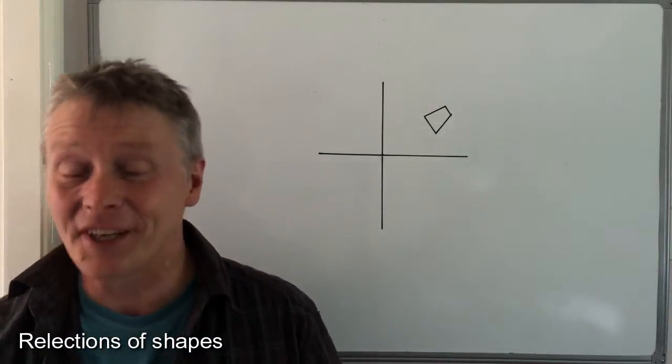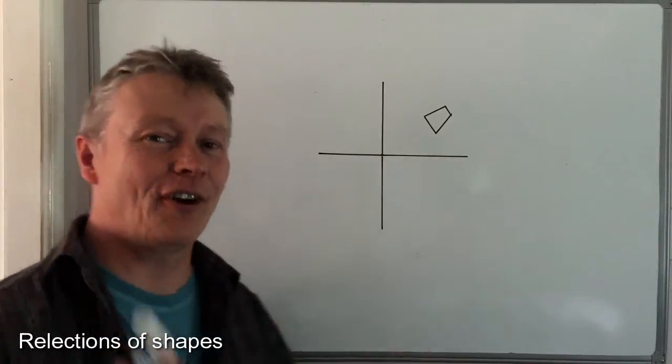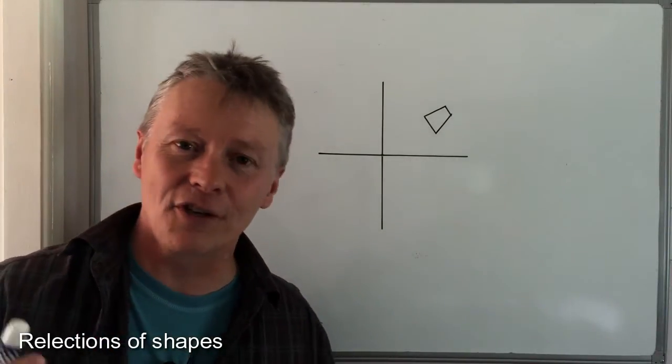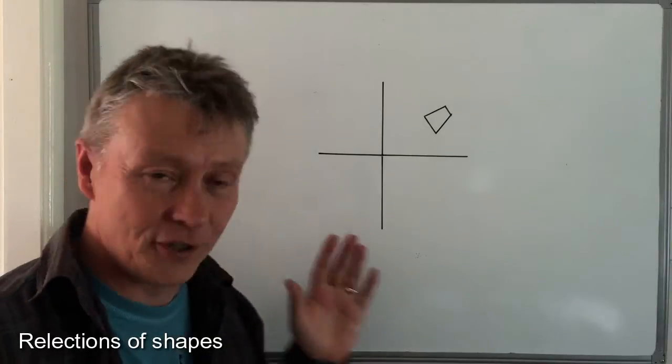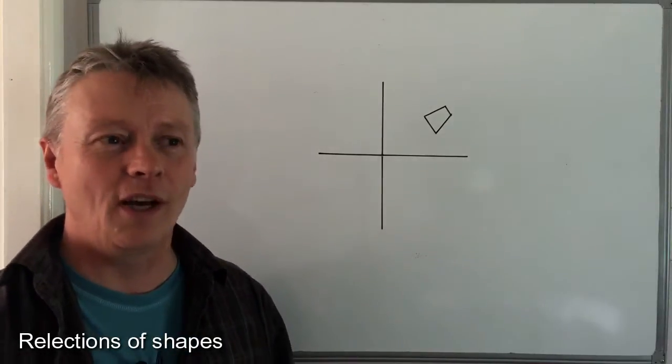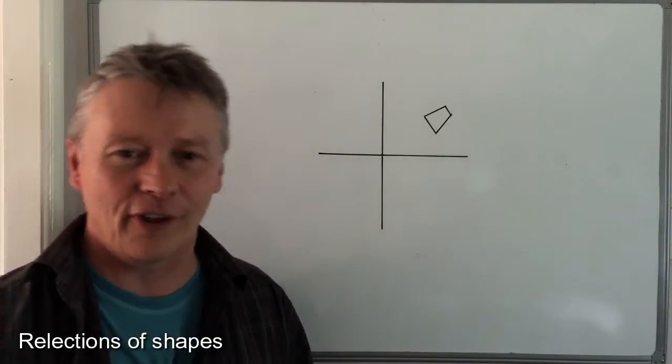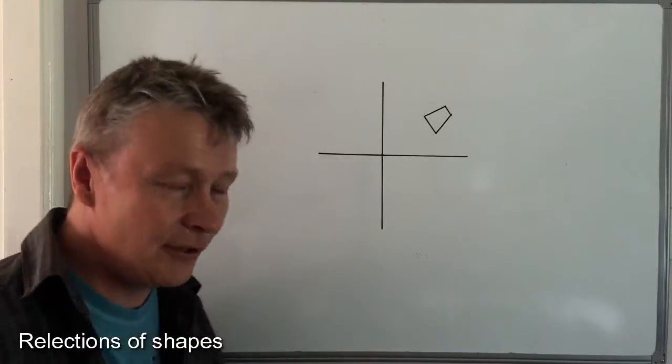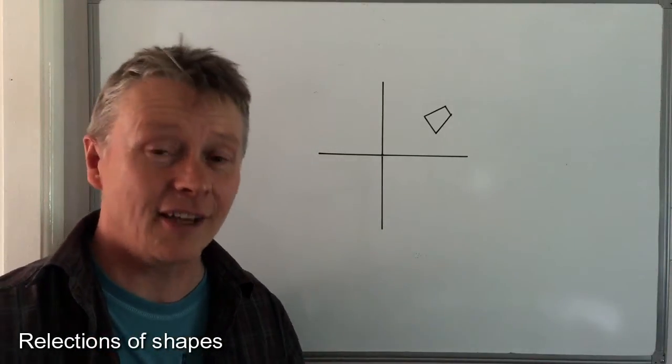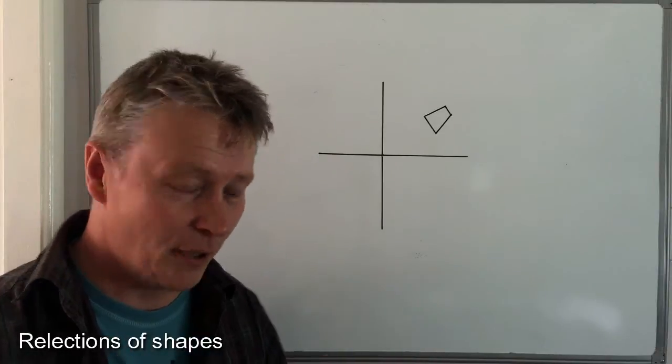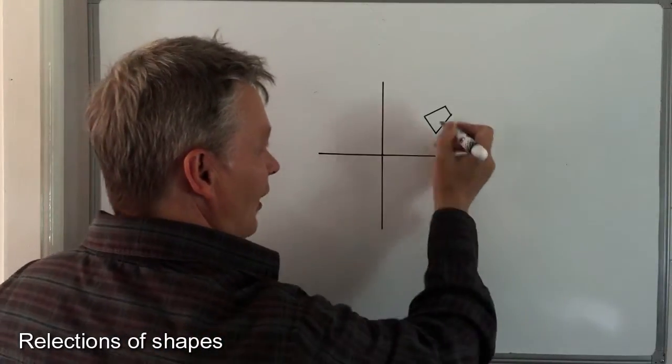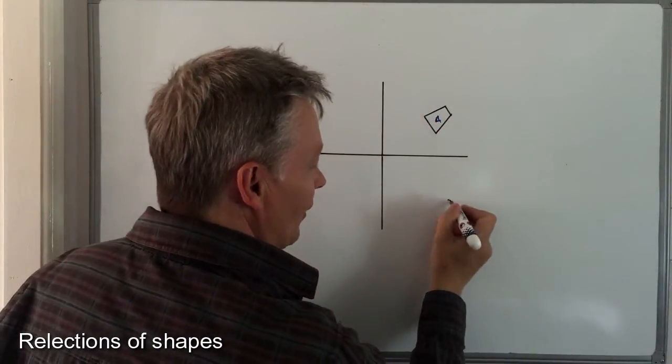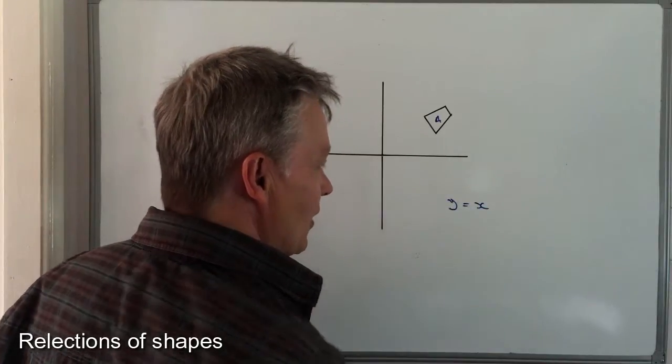So in this particular video, this is the final video in the series on reflections of shapes. It's the one where it's usually valued about four or five marks, and usually students don't get 100% of these marks because they're being asked to reflect shape A in the line y equals x.